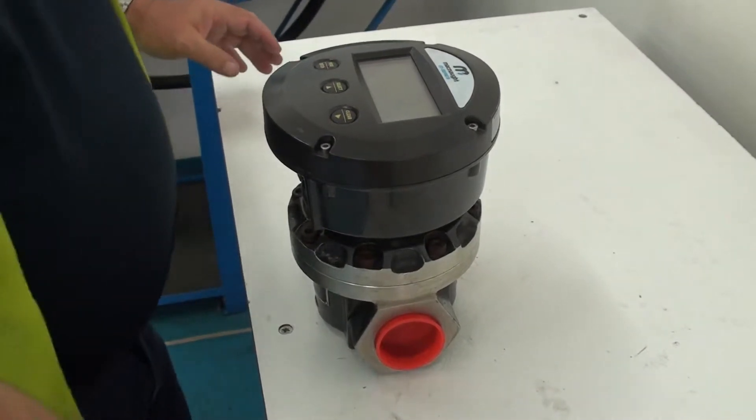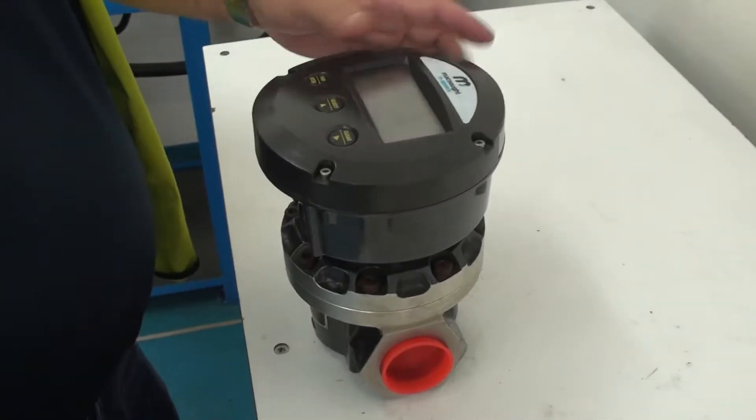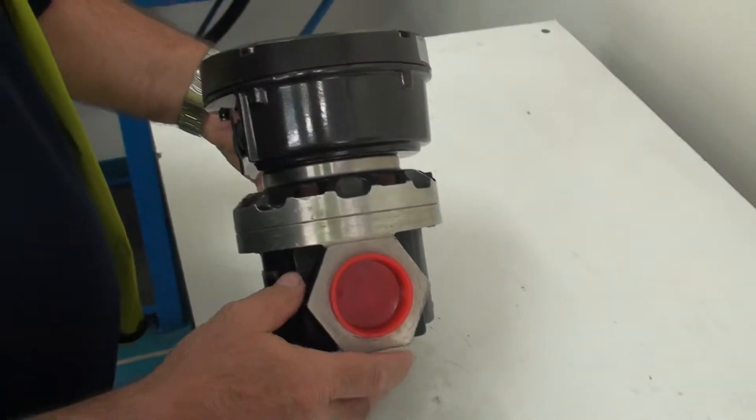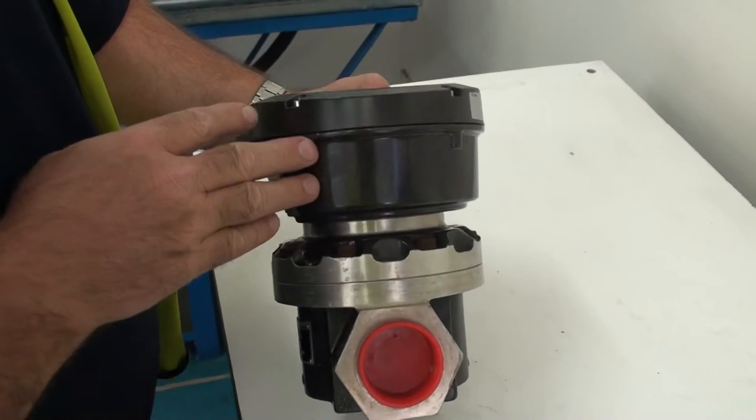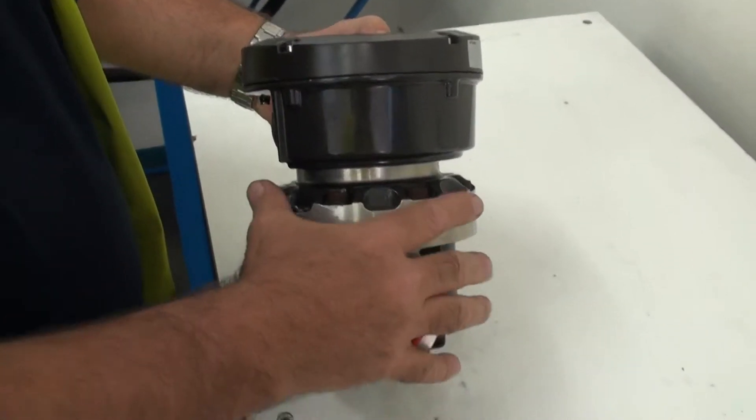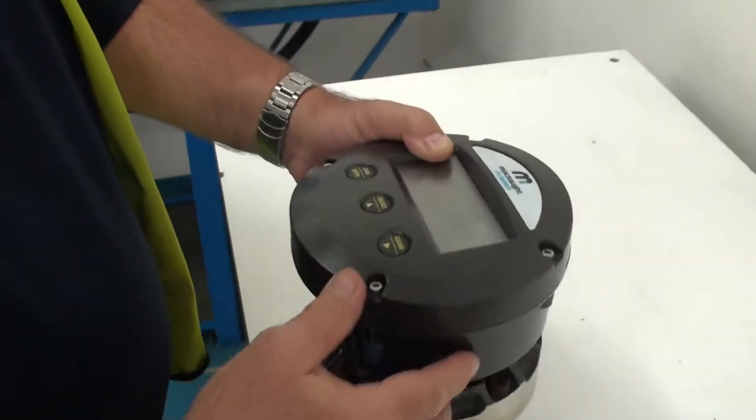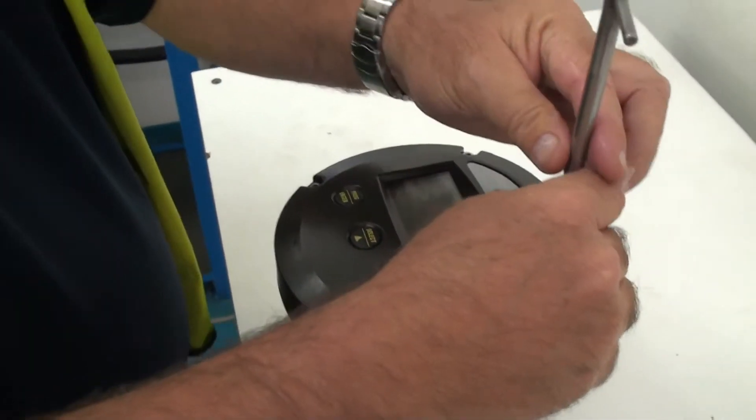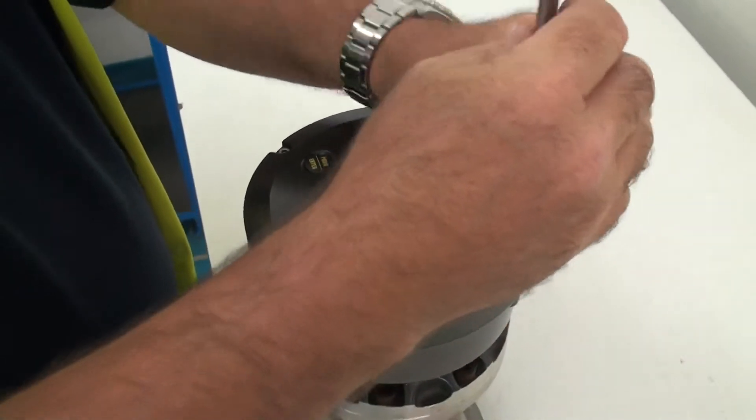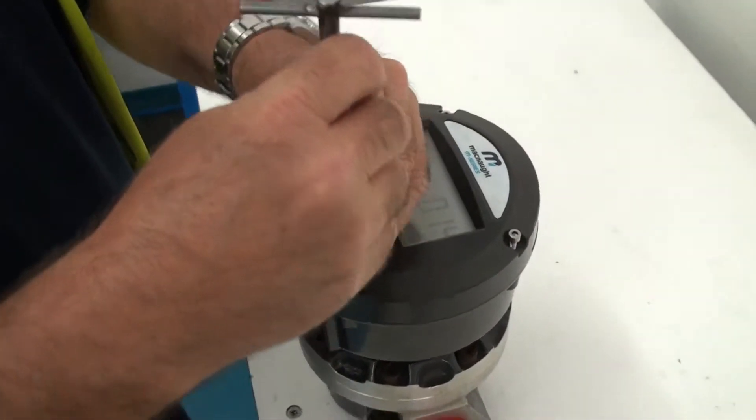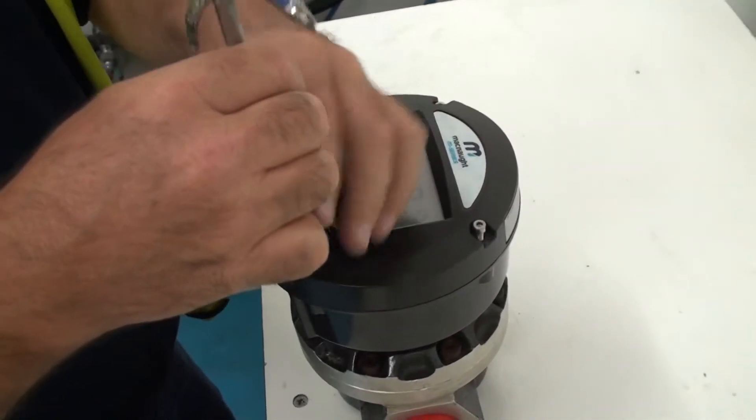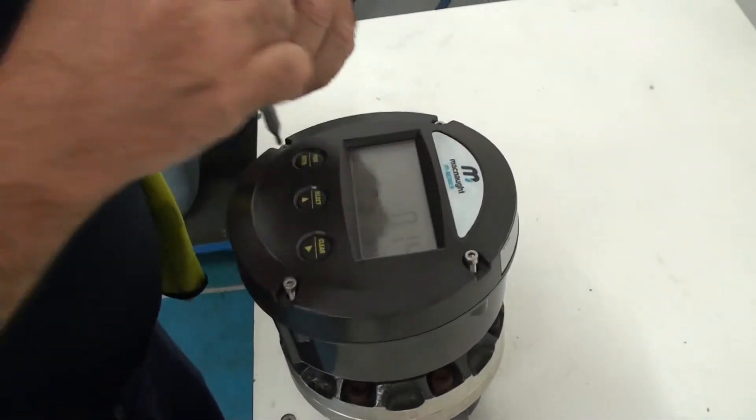We'll start by removing the electronic register. There are two parts to this flow meter. One of them is the digital register or the display and the other part is the actual flow meter itself. So we'll start by taking the digital register off and this will expose the internal parts of the pulse meter and we can have a look at them as well.